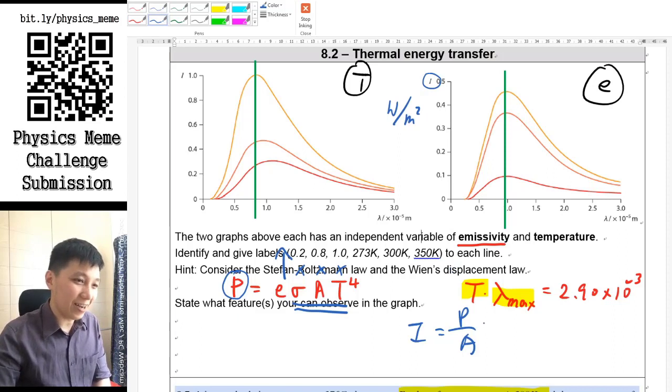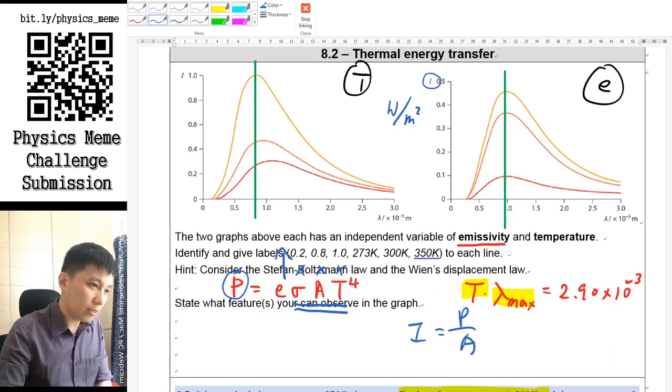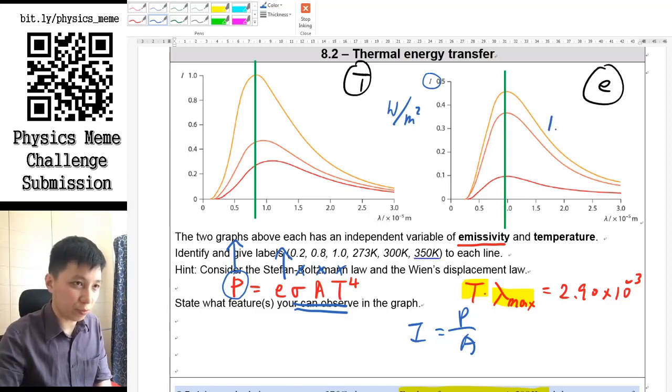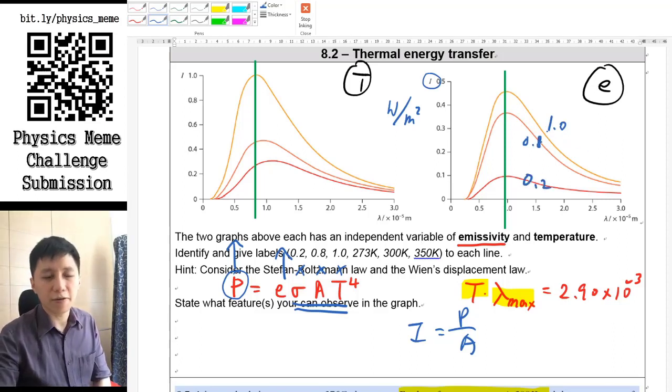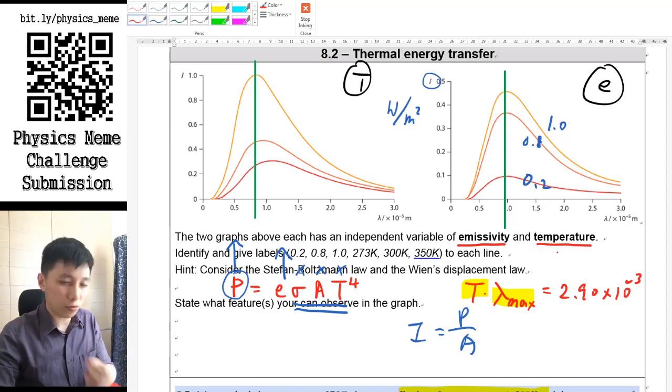If emissivity goes higher, then power will also go higher, so the one with a greater intensity should be of a greater emissivity. I should put 1.0 here, 0.8, and 0.2 here for these three lines.